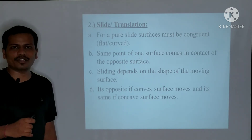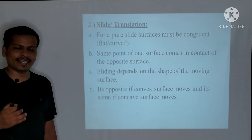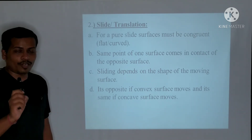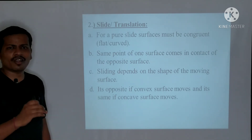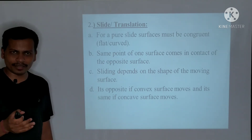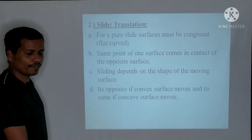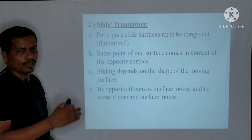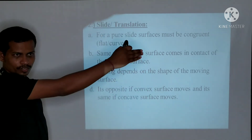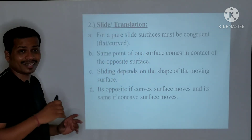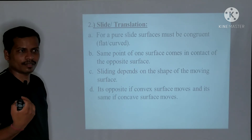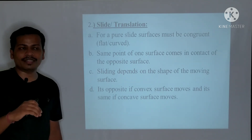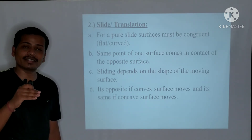The slide direction depends on the convex-concave rule, which will be covered in detail in the next video. Briefly: if a convex articular surface is moving — for example, glenohumeral joint flexion, which is an anterior motion — then the glide or slide occurs posteriorly, in the opposite direction.